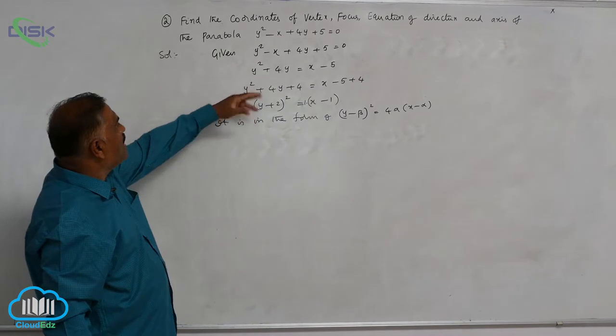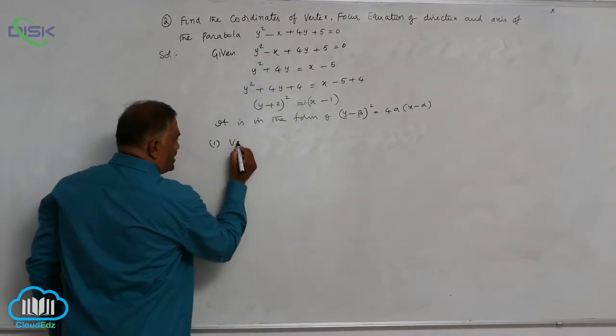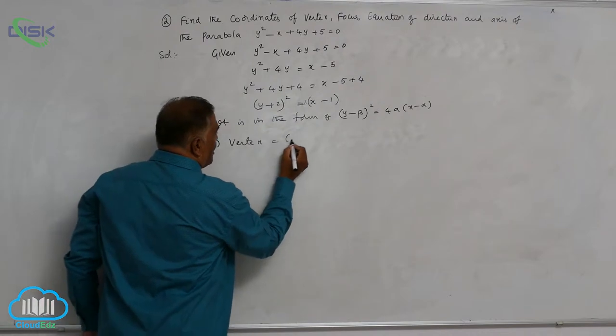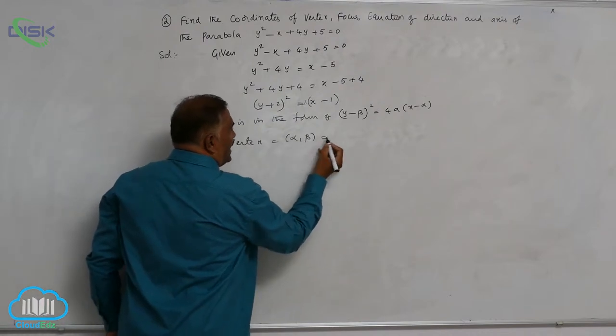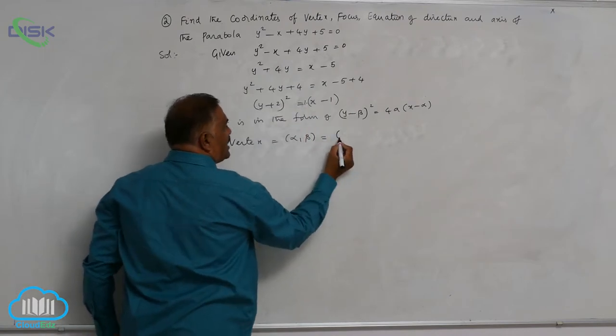Now what do you want here? Vertex. One by one you write. Vertex is equal to alpha comma beta. In place of alpha and beta we are having 1 comma minus 2.